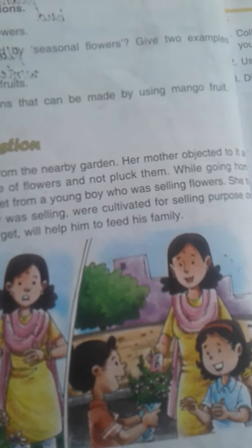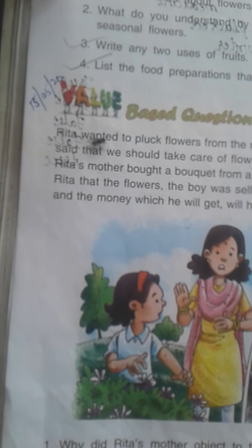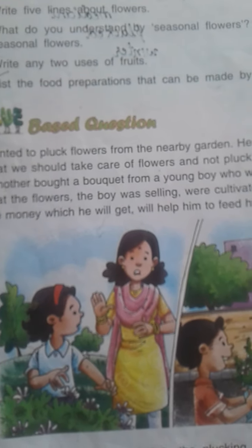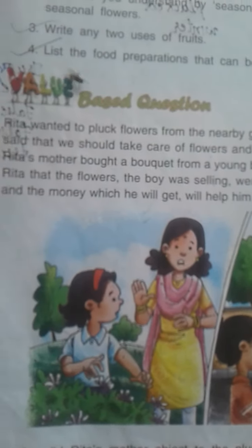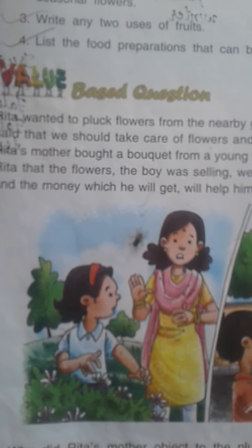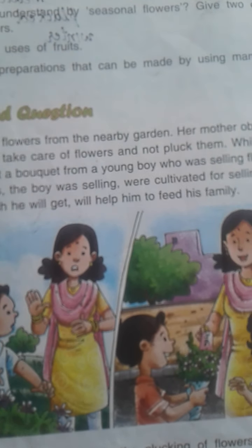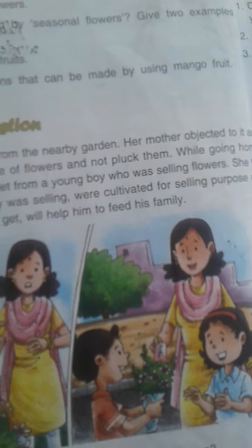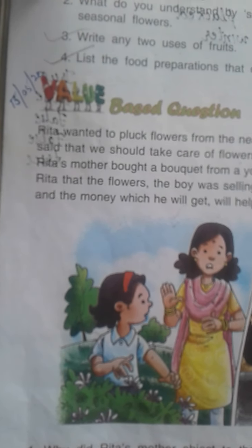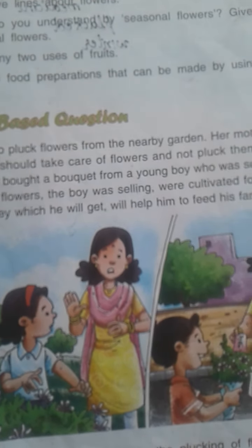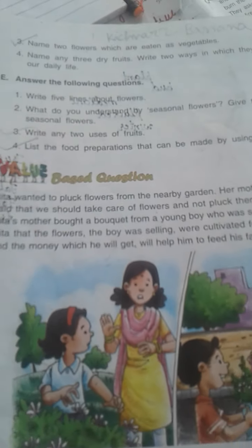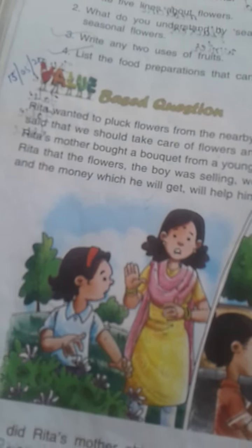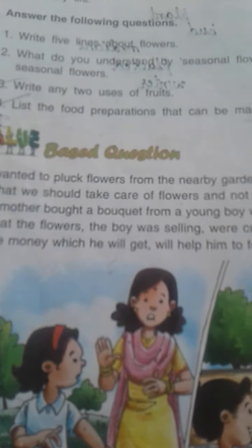While going home, Rita's mother bought a bouquet from a young boy who was selling flowers. She told Rita that the flowers the boy was selling were cultivated for selling purposes, and the money he will get will help him to feed his family. So here Rita's mother inculcates some value in Rita's mind.